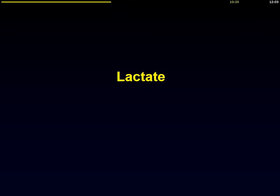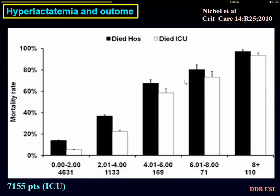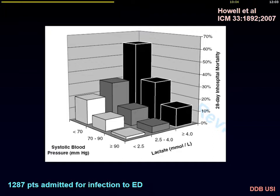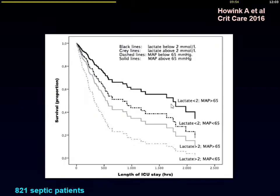Lactate is a very important marker of shock — the higher the lactate level, the higher the risk of death in the ICU and hospital. This has been confirmed in large databases in septic shock patients. Lactate is additive to blood pressure: for a given level of blood pressure, the highest lactate level is associated with the higher risk of death. When you have both abnormal, the risk of death is maximal. The risk of death in patients with increased lactate and normal blood pressure is exactly identical to those with low blood pressure and normal lactate.